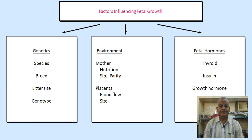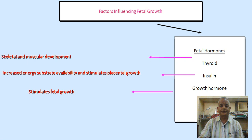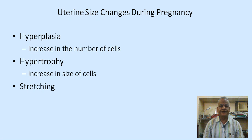The factors that influence fetal growth include genetics, environment, and fetal hormones. In genetics: species, breed, litter size, and genotype. The environment includes maternal nutrition, size, parity, placental blood flow, and size. Fetal hormones include thyroid, insulin, and growth hormone. Thyroid hormone is responsible for skeletal and muscular development, insulin for increased energy substrate, and growth hormone stimulates fetal growth.